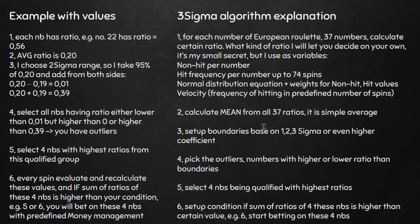Then I take all 37 ratios and create a simple average. For example, if ratios range from 0.5 to 2.5, your average might be around 1.5 — a simple mean. I think everyone can do that. Then I set up boundaries based on sigma, or I can also use a higher coefficient, which I'll show you in an example later.